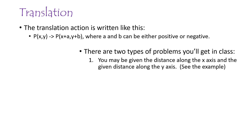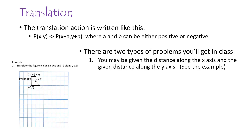There are two types of translation problems you'll get in class. One is where they explicitly tell you to move a distance along the X axis and another distance along the Y axis. In this example, we move the figure 6 along the X axis and -2 along the Y axis — you end up moving it over 6 and down 2.